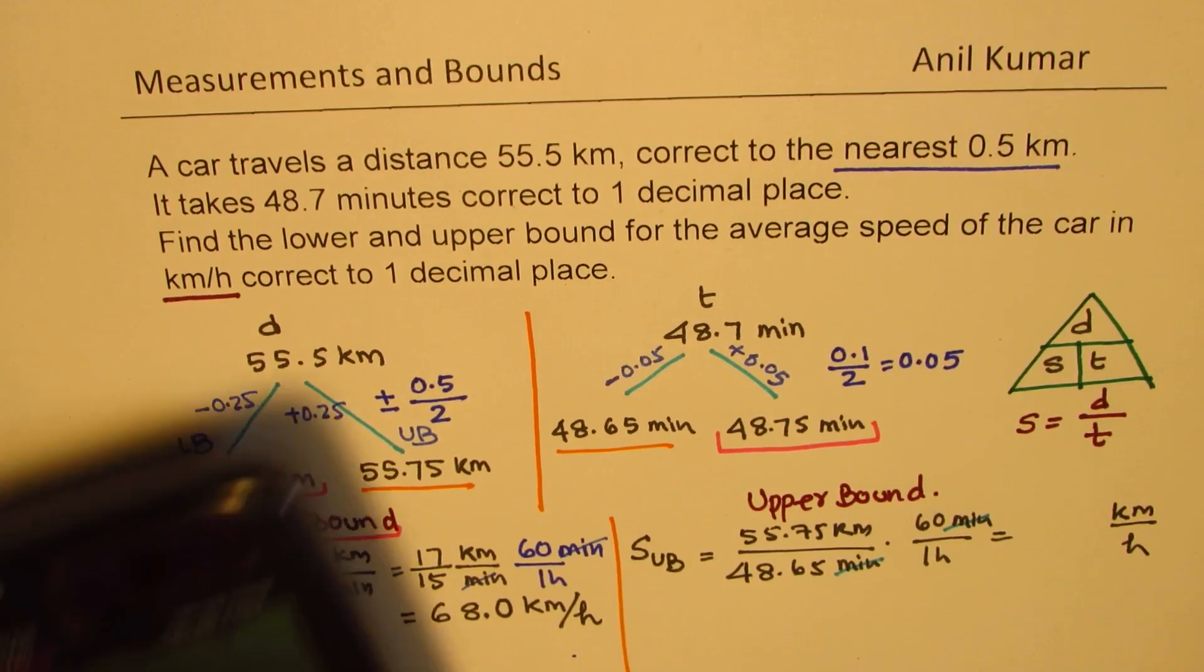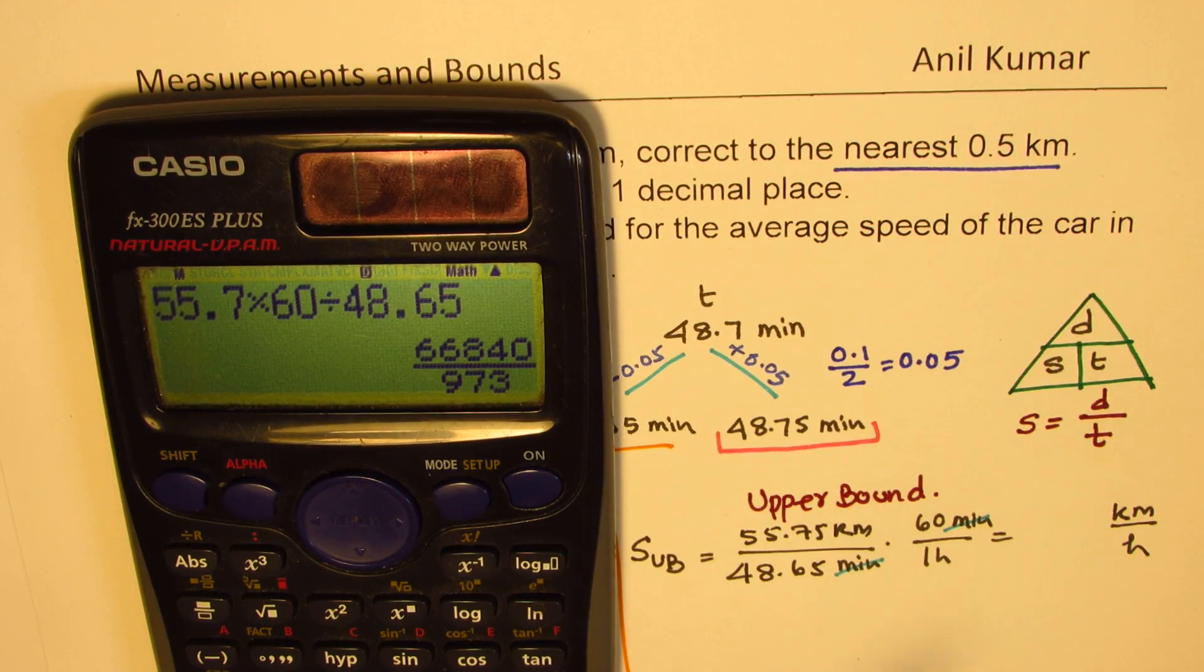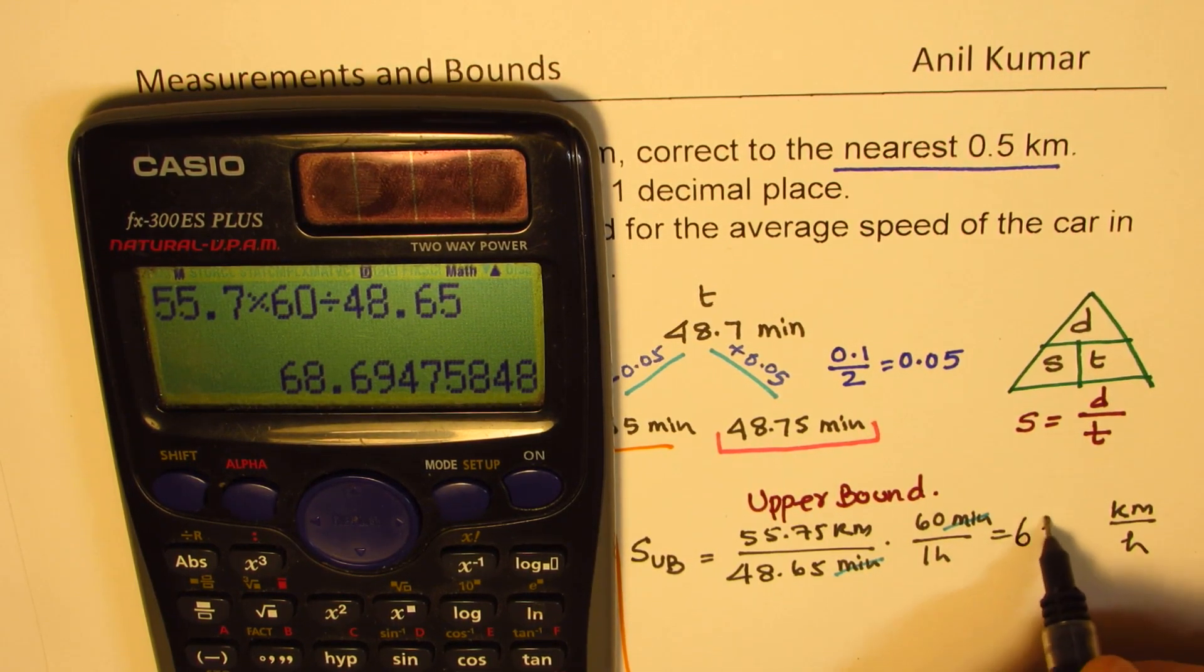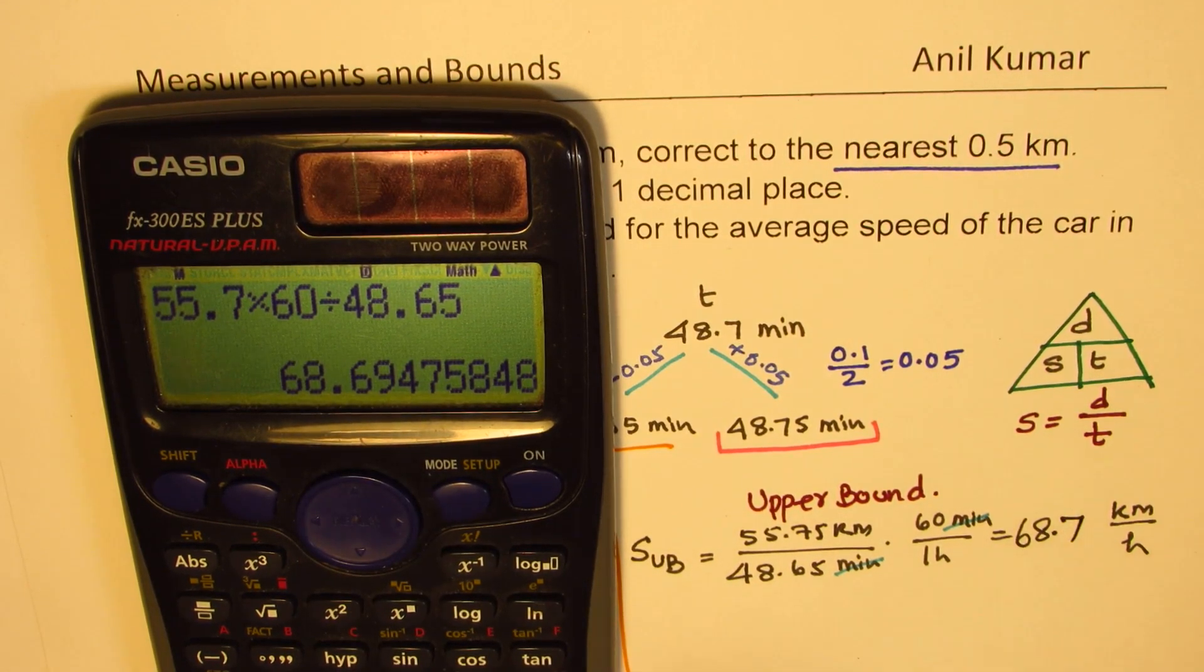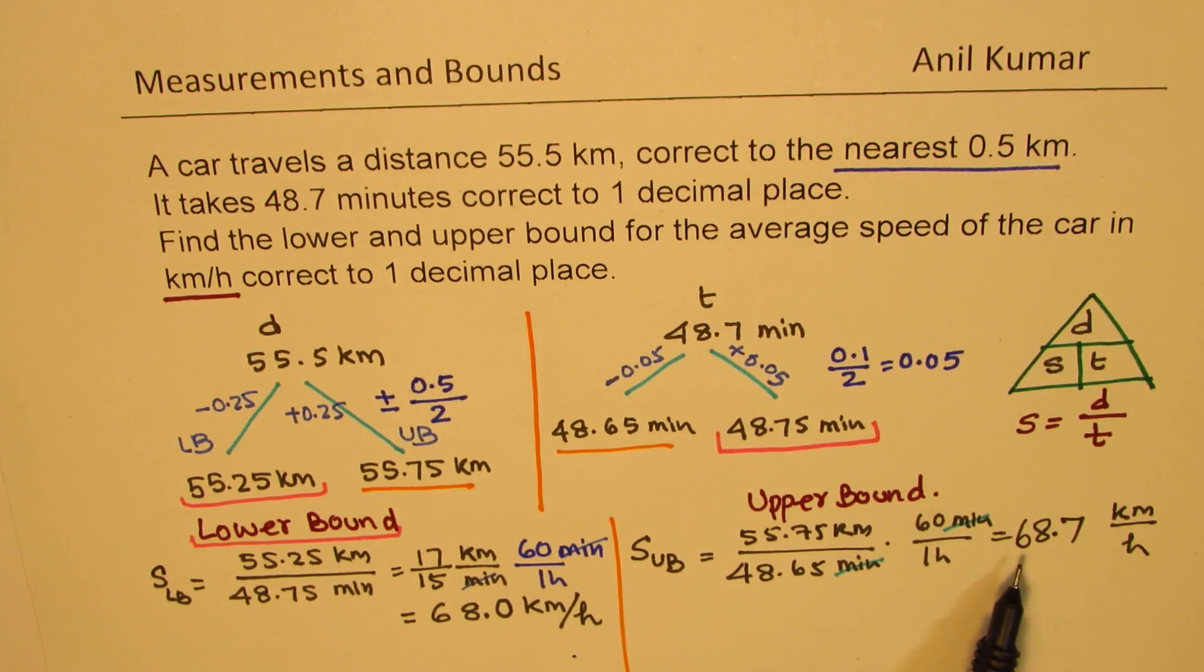Let's do this calculation. We have 55.75 times 60 divided by 48.65. And that is equal to, in decimals, 68.694. We'll round to 7. That is to one decimal place. So the upper bound for the speed is 68.7 kilometers per hour.